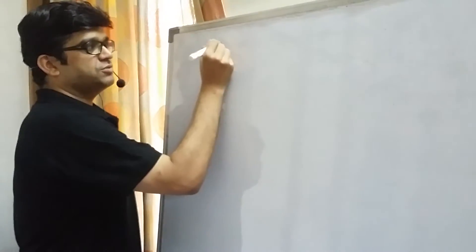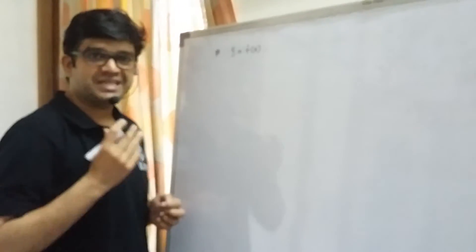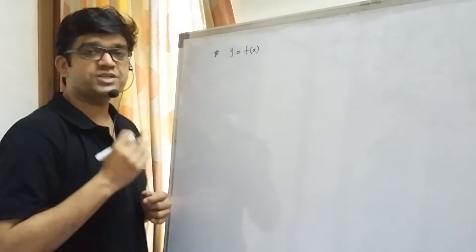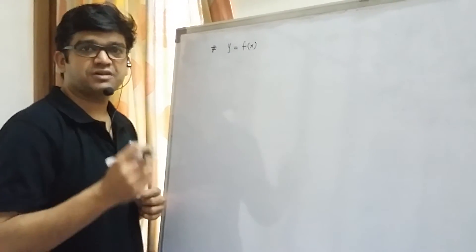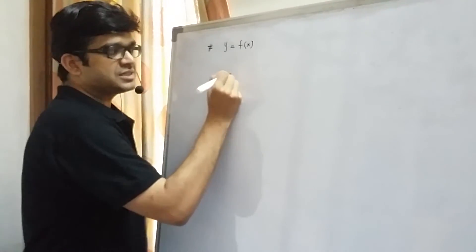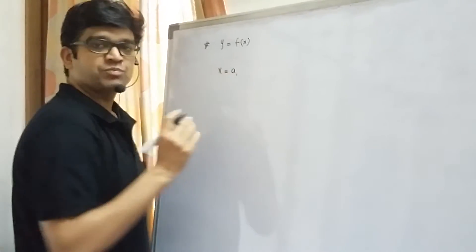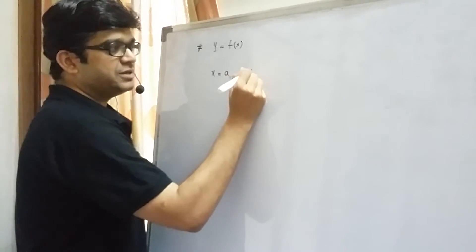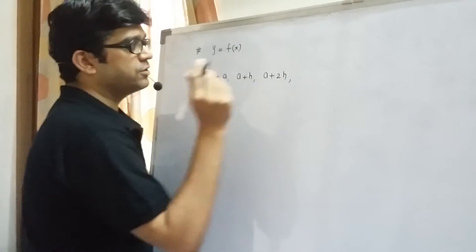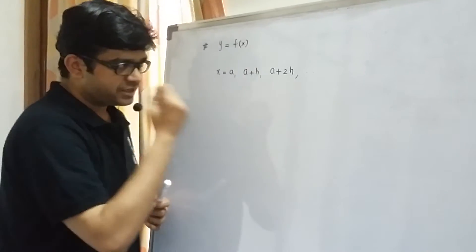So let us consider a function y equals to f of x. Now what I am saying is this particular function is equally spaced function with a step length h. Now what is meaning of equally spaced function with step length h? It means x will increase in the step size of h. Suppose x value is a, then the next value of x will be a plus h and the next value will be a plus 2h and so on. So such kind of function we can call it as an equally spaced function with step length h.